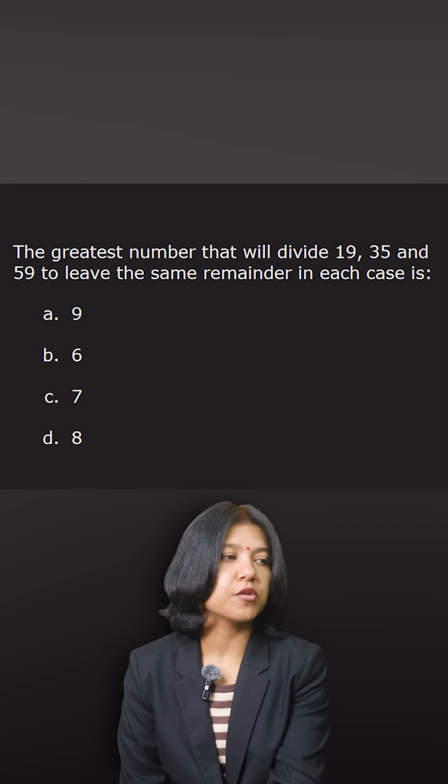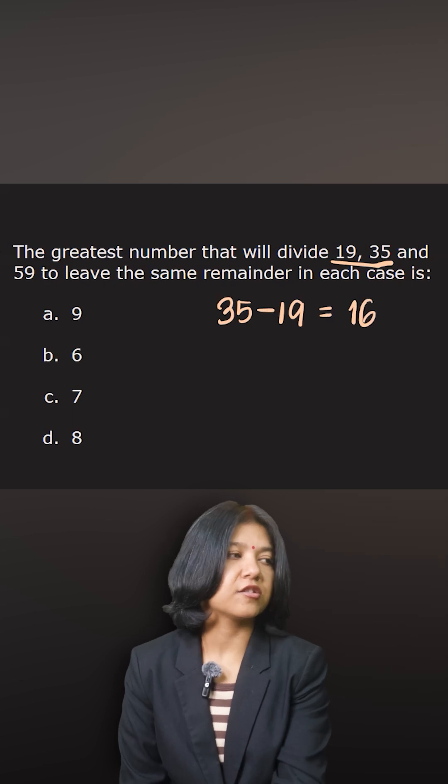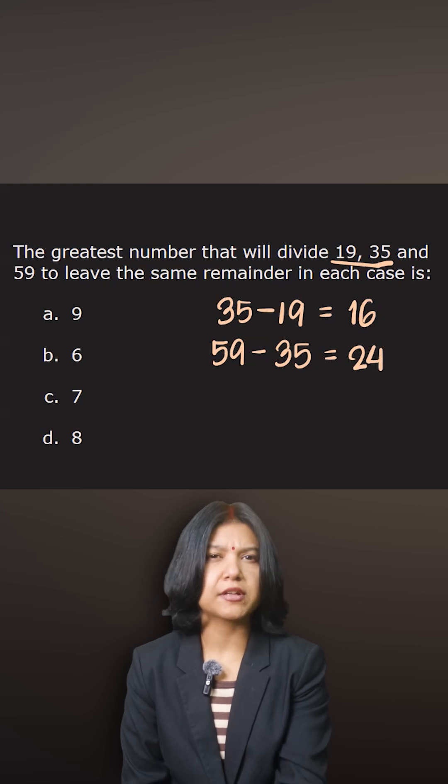Now you want to find their difference. 19 and 35, what's their difference? The answer is 16. Similarly, 35 and 59, what's their difference? The answer is 24.